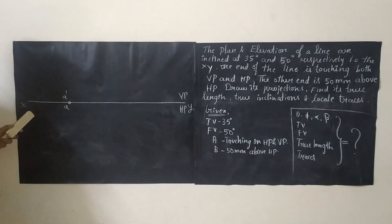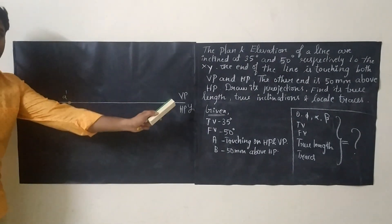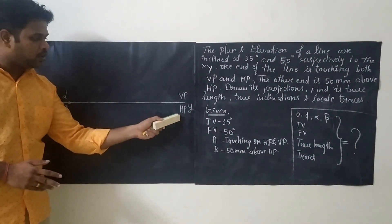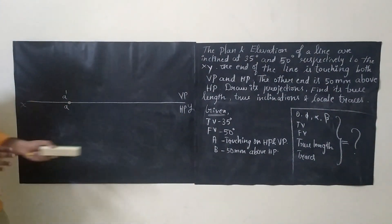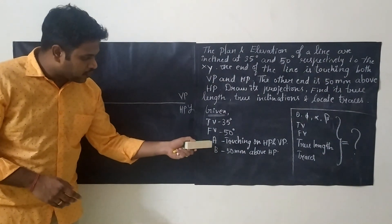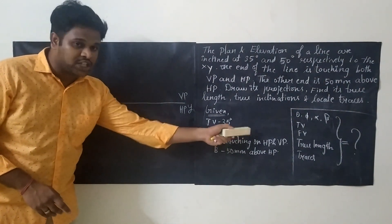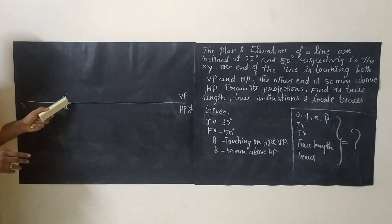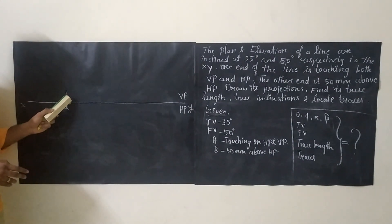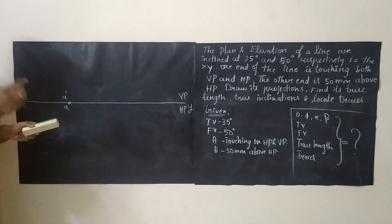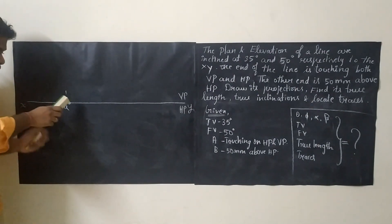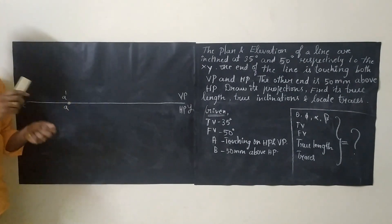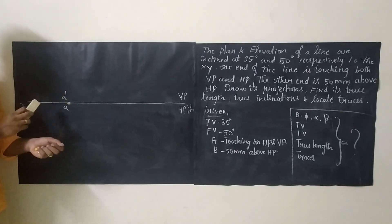First, we are going to draw the reference line XY. According to first-angle projection, the vertical plane will be above and the horizontal plane will be below. Since point A is touching both HP and VP, the point will be lying on the reference line itself. This holds good for both A-dash and A.